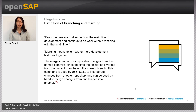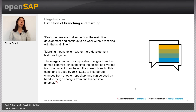Because definition is the beginning of knowledge, let's define what branching and merging are. Based on the official Git documentation, branching means to diverge from the main line of development and continue to do work without messing with that main line.